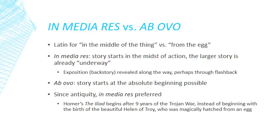Generally speaking, since antiquity in literary criticism, in medias res has been preferred — it's viewed as a more artful, more pleasing, more powerful way to start a story. For example, Homer's Iliad, the great epic poem from ancient Greece about the Trojan War, doesn't start at the beginning of the Trojan War. It starts nine years in, at the beginning of the 10th year of the war — so it begins in media res. The term ab ovo actually comes from this: the war was fought over Helen of Troy, who was magically hatched from an egg. To begin ab ovo would have meant going all the way back to her birth, through her life, to the events of the war — which would have been much longer, much broader, and much more tedious to read.